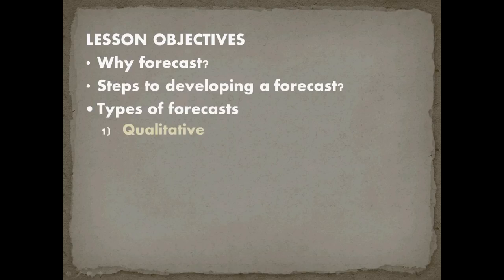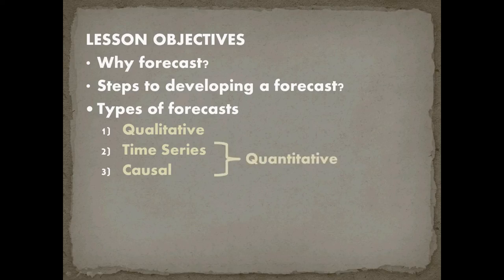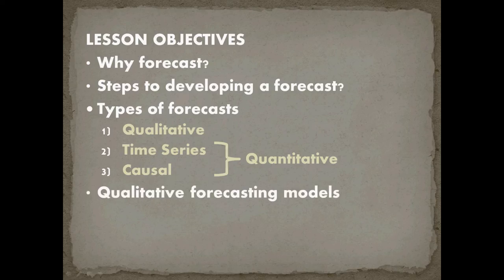The first is qualitative, the second will be time series forecast, and the third are causal models. The second and third, time series and causal, are quantitative forecasts and so they rely on a lot more numbers than the qualitative forecast. And then finally we're going to cover the qualitative forecasting models, some of the major ones that are out there.